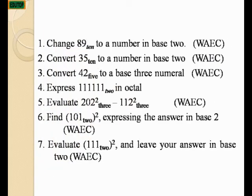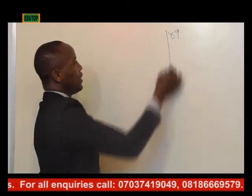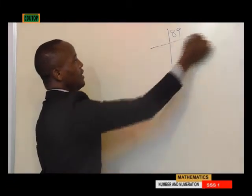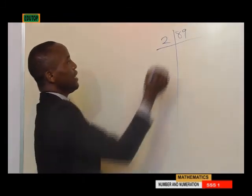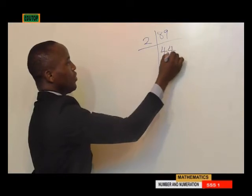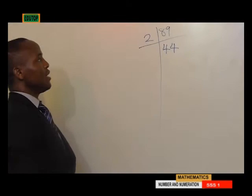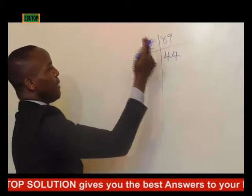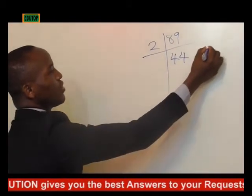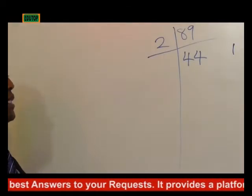Our first example is to convert 89 base 10 to a number in base 2. First, we write 89, draw a division line, and write 2. 89 divided by 2 gives us 44. 44 times 2 gives us 88, and 89 minus 88 gives us 1 — so our remainder is 1.